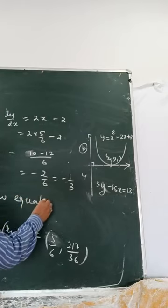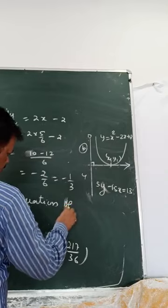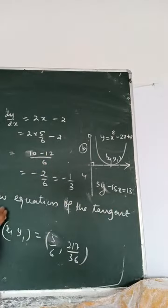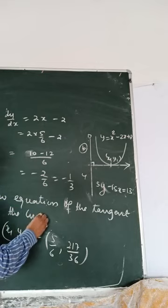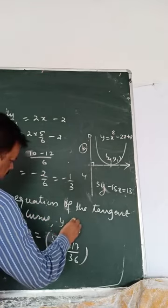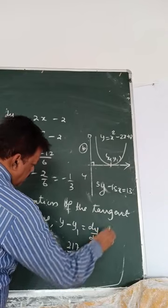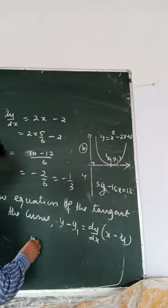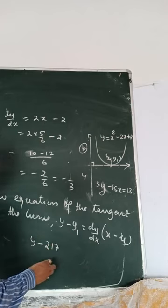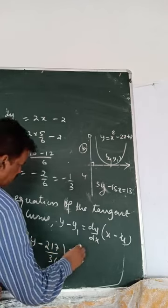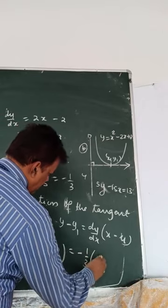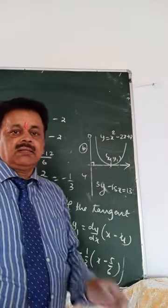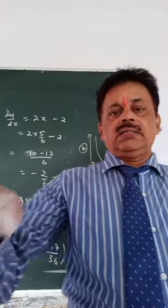Equation of tangent: y minus 217/36 equals minus 1/3 times x minus 5/6. You can take LCM and do cross multiplication to simplify and get the final answer. We will continue with more important questions tomorrow.